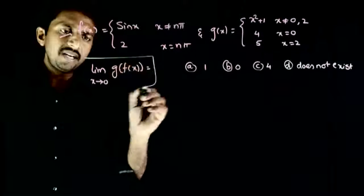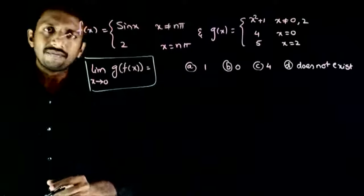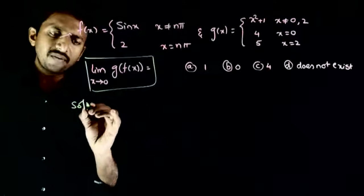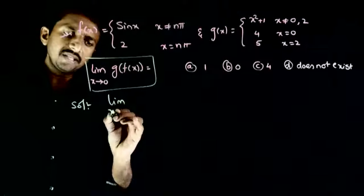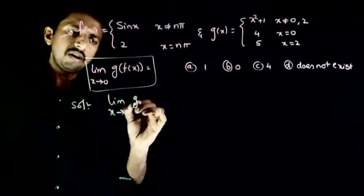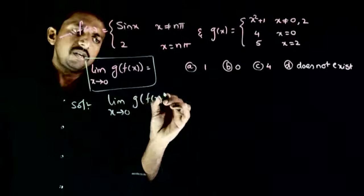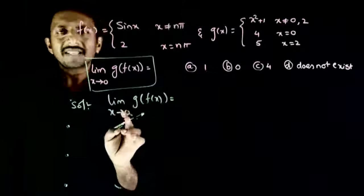We are asked to find limit x tends to 0 of g(f(x)). So a very straightforward question. Limit x tends to 0, g is nothing but, so as x tends to 0,